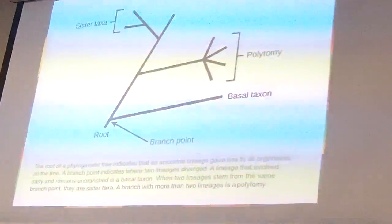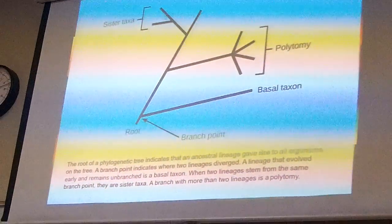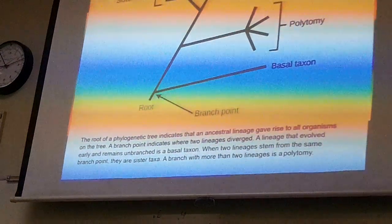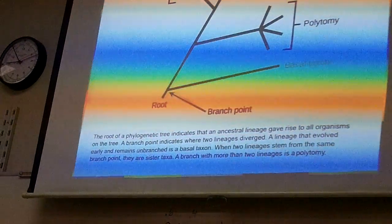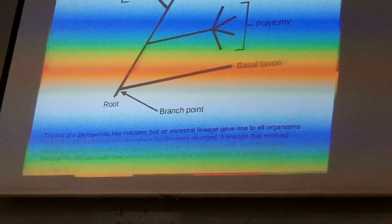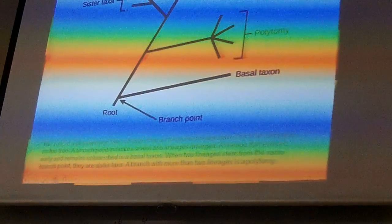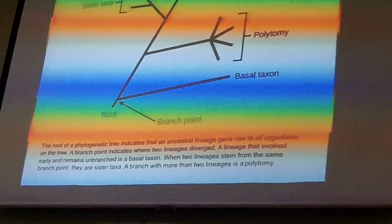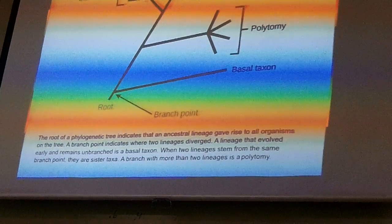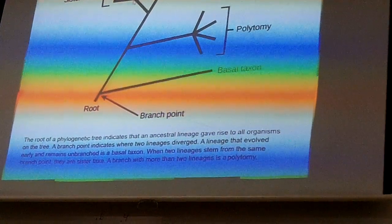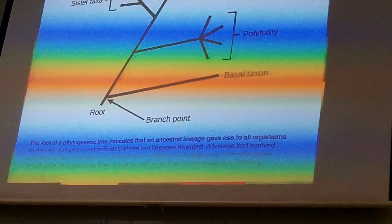You can't say humans evolved from chimps, because as you go backwards down the tree, you're going backwards in time. Seven million years ago, chimps may have been different than they are now.